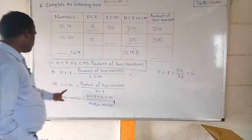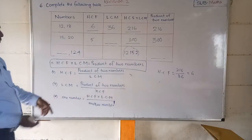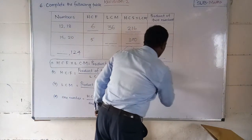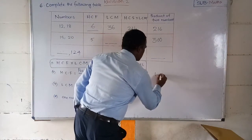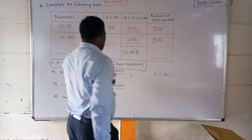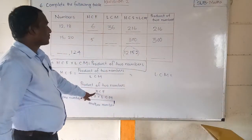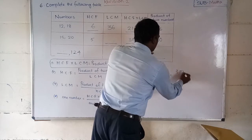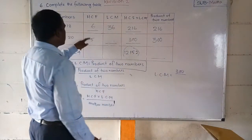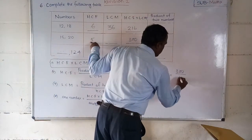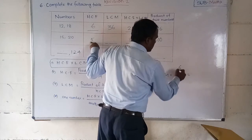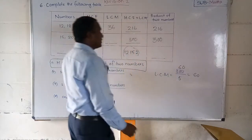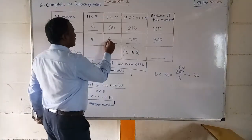Now, LCM is asking — which formula? The third formula: LCM is equal to product of the two numbers divided by HCF. The product of the two numbers is 300, divided by HCF which is 5. Simplifying, LCM is equal to 60. So we can write 60.